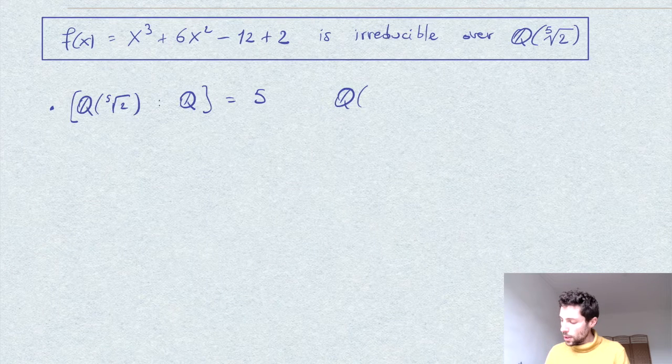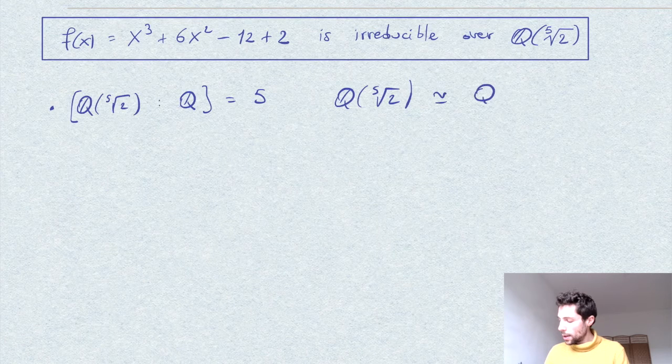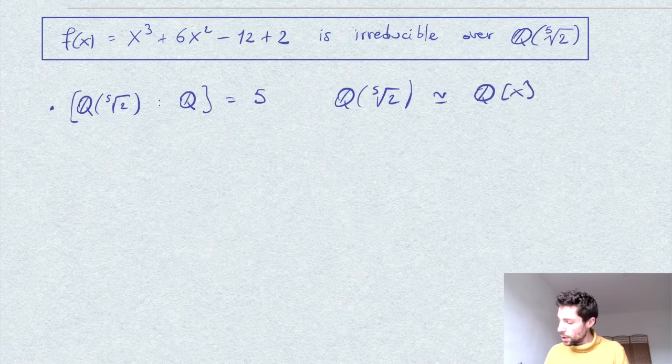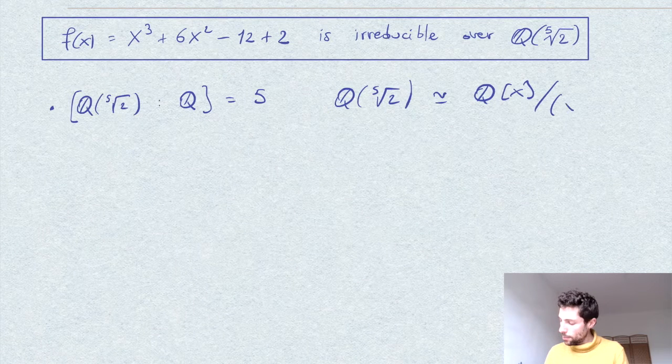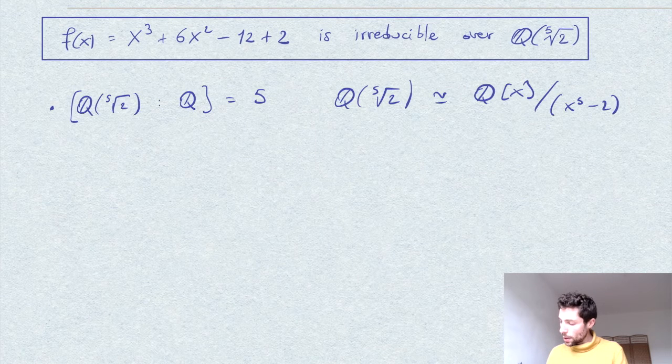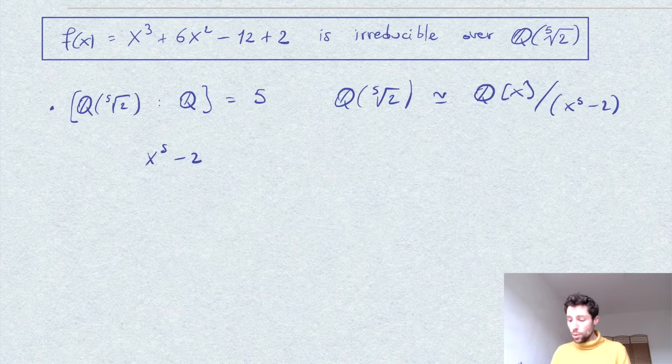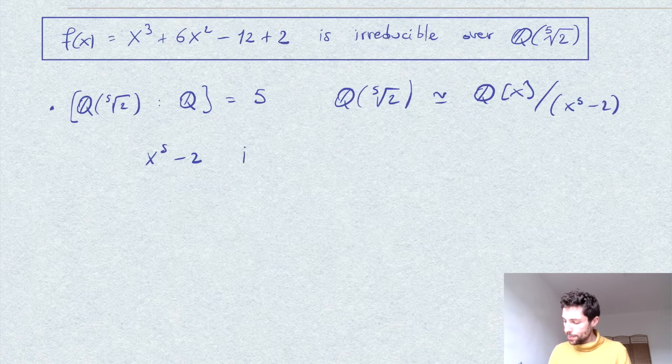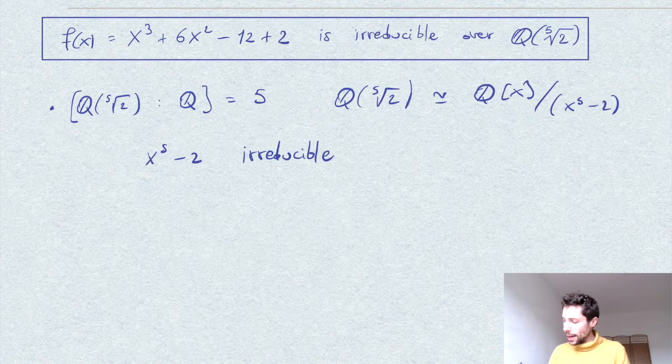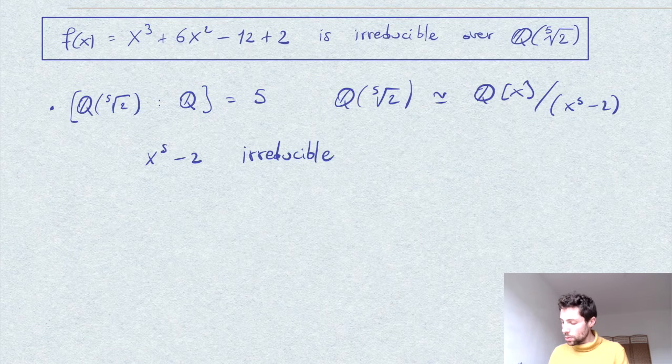In fact, this follows by the observation that this field can be written as the quotient of Q, the polynomial ring Q[x], over the polynomial x^5 - 2, which is irreducible over Q. You can prove this by applying Eisenstein's criterion with p equals 2.